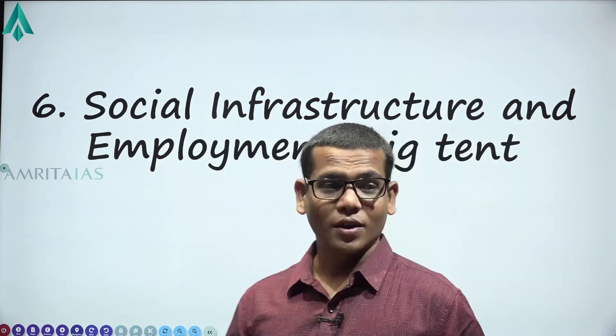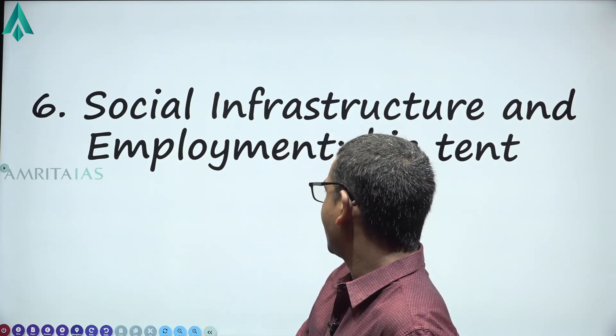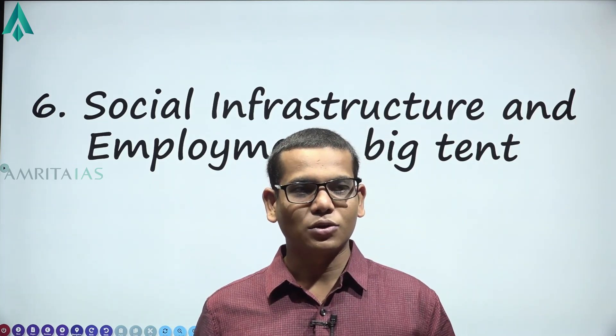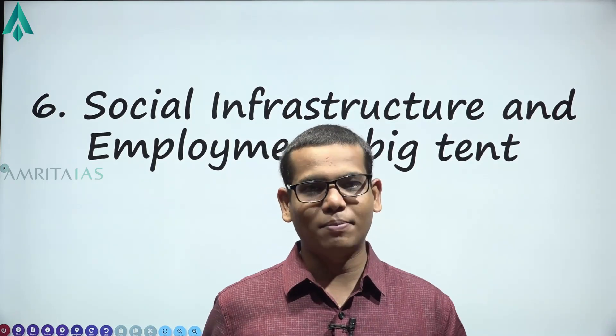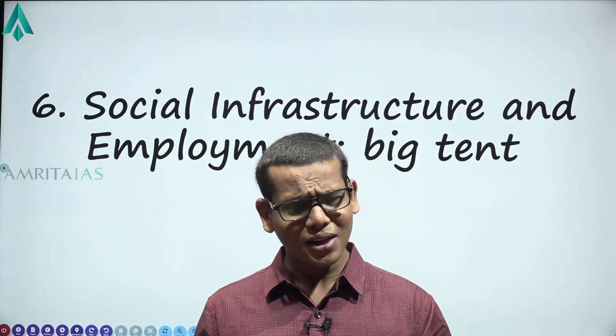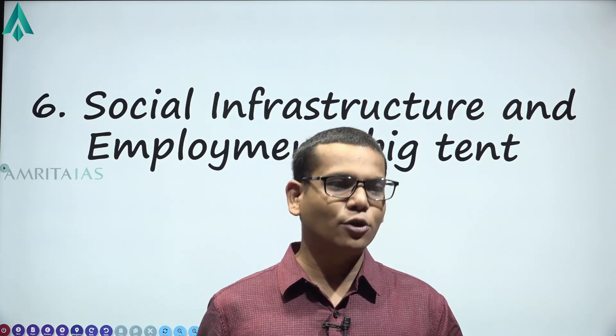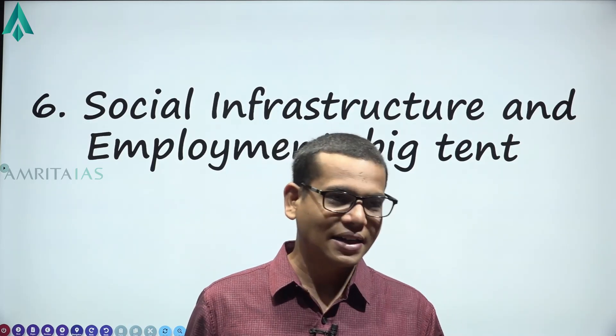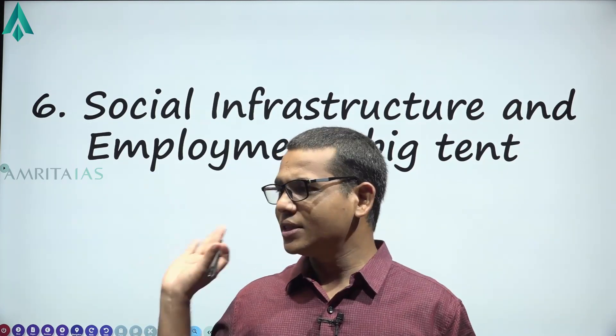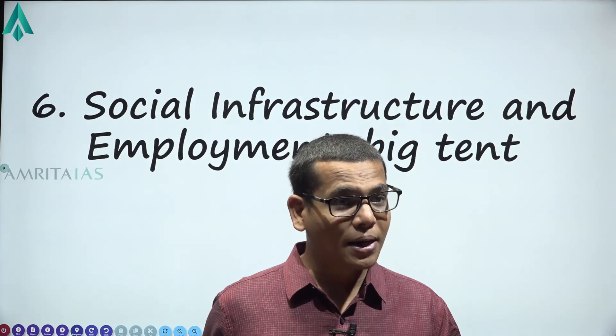Hello friends, today we will discuss the sixth chapter of the Economic Survey, that is Social Infrastructure and Employment Big Tent. This is the lengthiest chapter in this year's Economic Survey. In this particular chapter, the survey deals with the concept of human development, its components, and the various schemes started by the Government of India to improve human development — be it education, health, drinking water, sanitation, and so on. This chapter is very important for both prelims and mains.